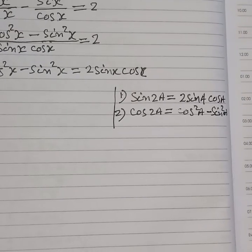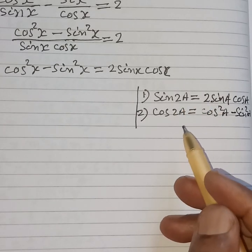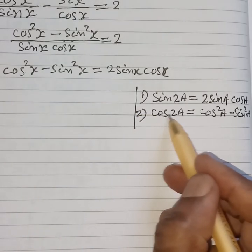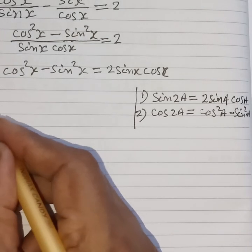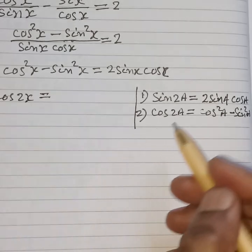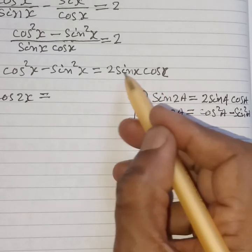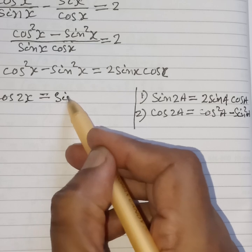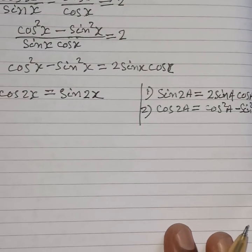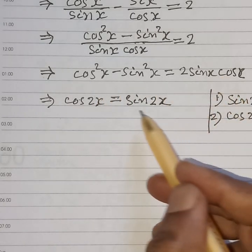Therefore, according to these identities, cos squared x minus sin squared x equals cos 2x, and 2 sin x cos x equals sin 2x. So the equation becomes cos 2x equals sin 2x.